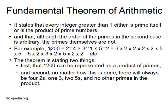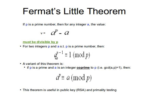1200 is not prime — it's a composite number. Therefore it can be broken down to a product of prime numbers: 2 to the power 4 times 3 to the power 1 times 5 to the power 2. That's 3 times 2 times 2 times 2 times 2 times 5 times 5. This is the fundamental theorem of arithmetic: 1200 can be represented as a product of prime numbers, and that set of prime numbers will never change — we'll always have the same ones.